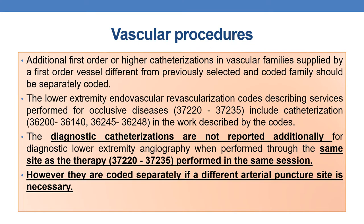If additional first order or higher catheterizations in a vascular family supplied by a first order vessel different from the previously selected or coded family are performed, they need to be coded separately. That is, if the vessel does not come under the same vascular family, catheterizations for that vessel should be coded separately — not with the add-on codes.